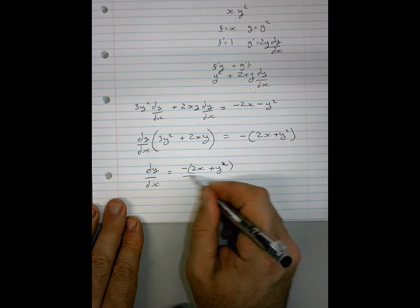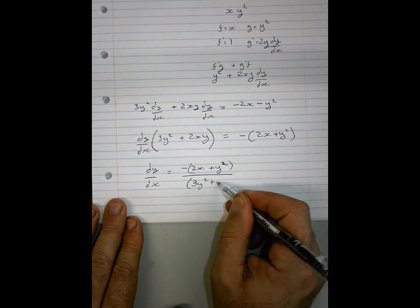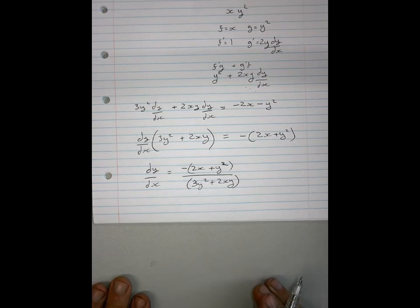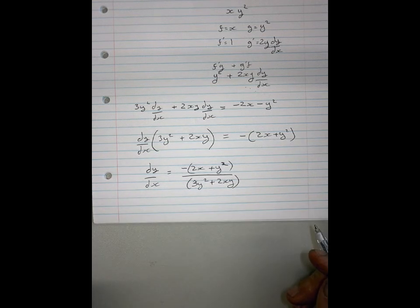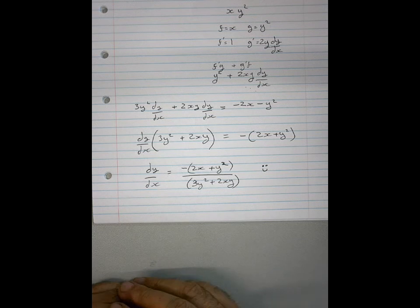divided by 3y squared plus 2xy. There's a huge temptation to simplify that. Don't. That is the right answer. That is how you do implicit differentiation. Please watch it as many times as you need.